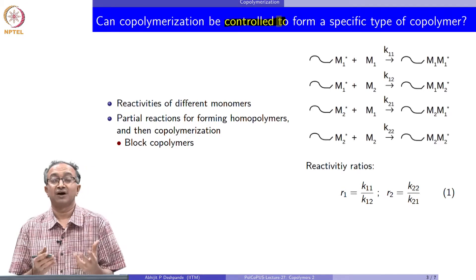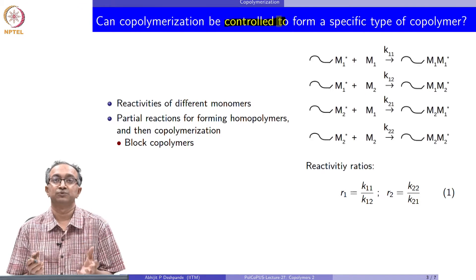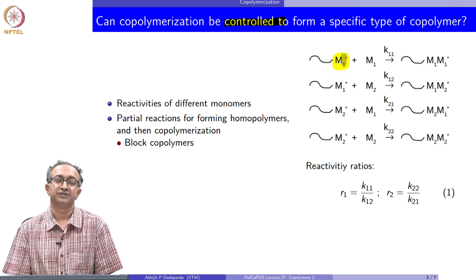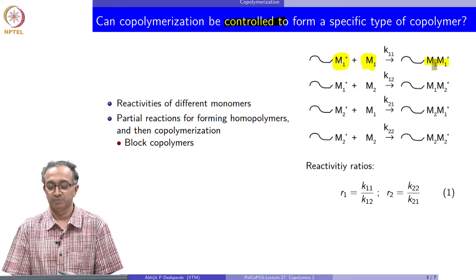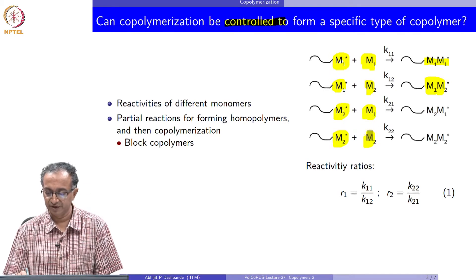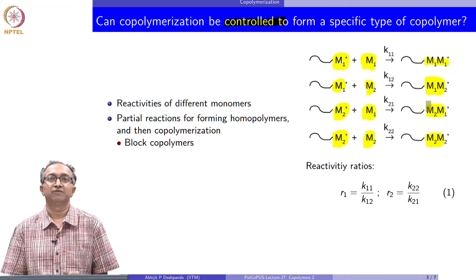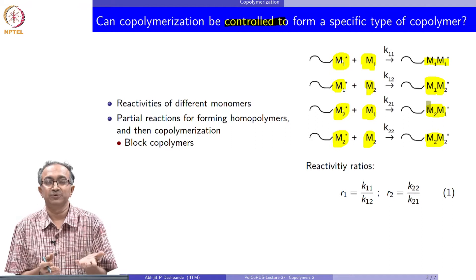Copolymerization is a technique to achieve a target sequence desired for a given application. The question is how well can we control it. What is shown here is a reaction between two different monomers M1 and M2. The active species of a chain with M1 as the active species can react with M1 itself to give M1-M1, or M1 can react with M2 to give an M1-M2 bond. Similarly, M2 can react with either M1 or M2 to give M2-M2 or M2-M1. These are the four possibilities when thinking of a reaction between M1 and M2.